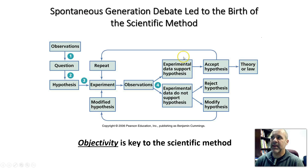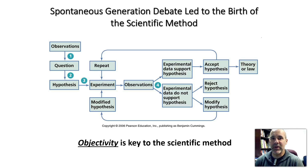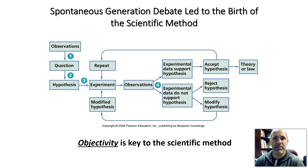The scientific method is the process that you use to explain things from a scientific standpoint. Not all things that we experience in life can be explained using science — religious faith, for example, or the existence of God; you can't test God scientifically. So not all things fall within the realm of science, but those that do, you have to go through this process — the scientific method — in order to explain them.